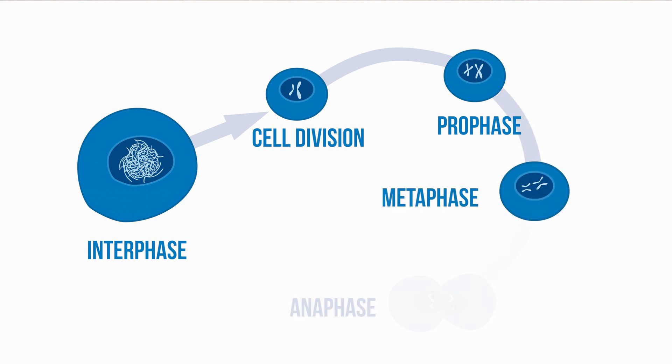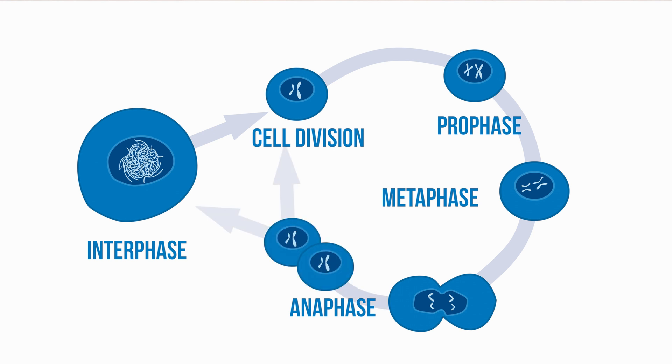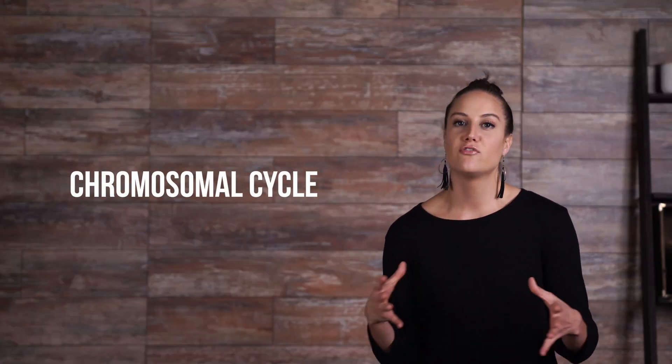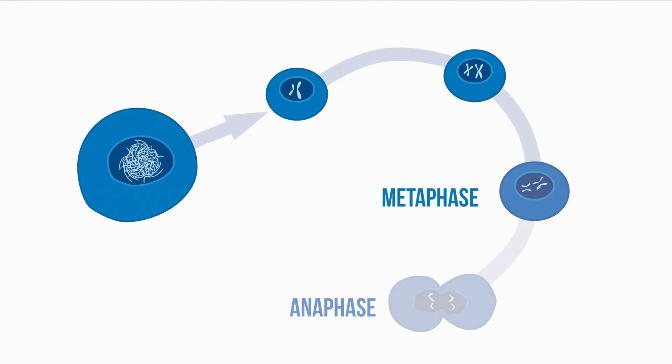During metaphase and anaphase, the chrominomata start to completely form and compact together, and begin configuring into structures of chromatids. This cycle of variation in size and shape of the chromosomes during a cell's cycle is referred to as the chromosomal cycle. The formation of chromosomes is most clearly observed at metaphase and anaphase, because that is when the chromosomes are the most compact or dense, which makes them easier to see.